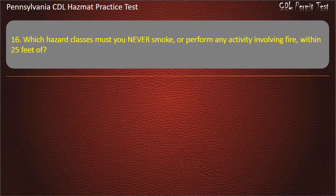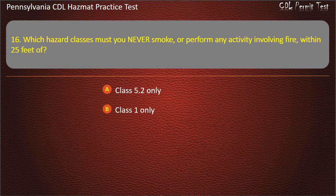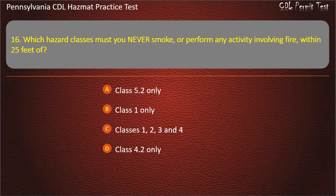Question 16. Which hazard classes must you never smoke or perform any activity involving fire within 25 feet of? Options: Class 5.2 only; Class 1 only; Classes 1, 2, 3, and 4; Class 4.2 only. Answer: Classes 1, 2, 3, and 4.